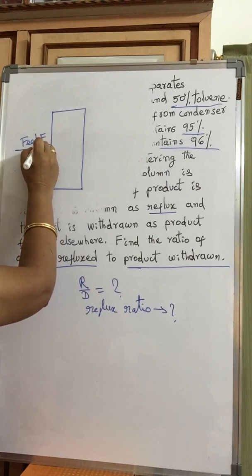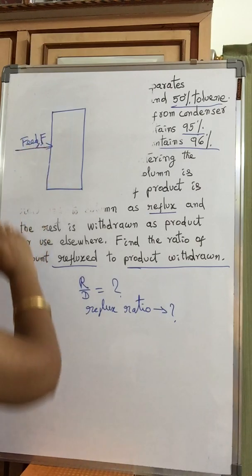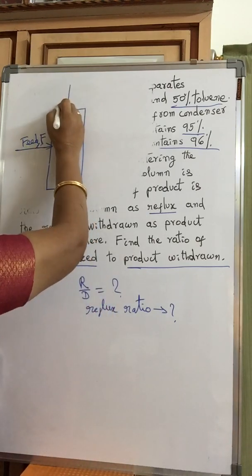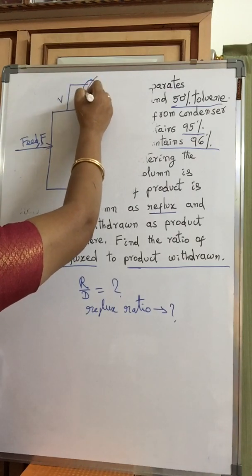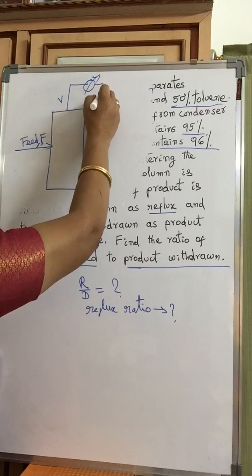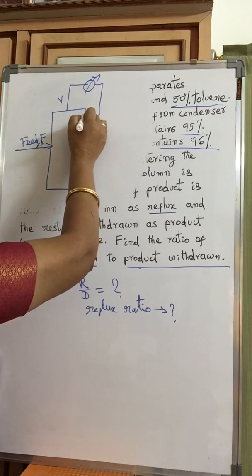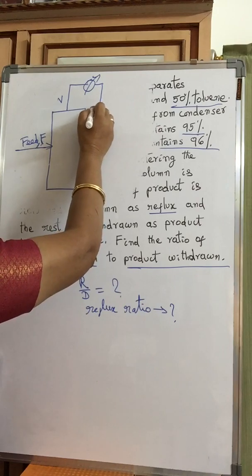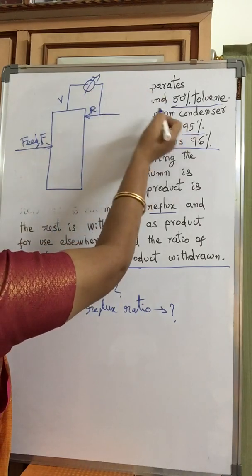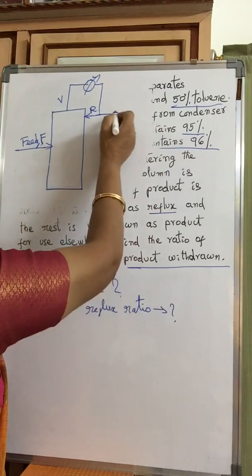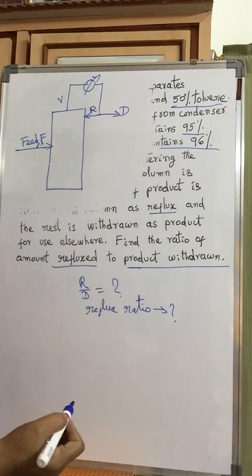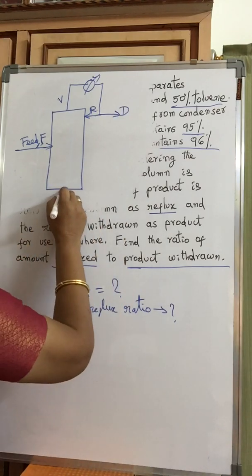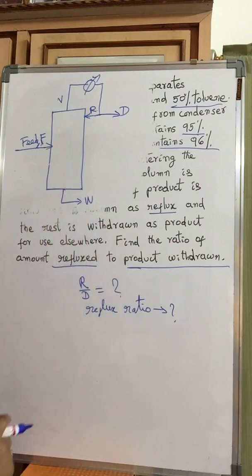Feed F is entering the column at some kg per hour — that is given. Vapor V is forming at the top and being condensed. After condensing, a part of the stream is being refluxed back — that is R. The rest of the product, as described in the problem, D, is withdrawn as product for use elsewhere. W is the bottom product.